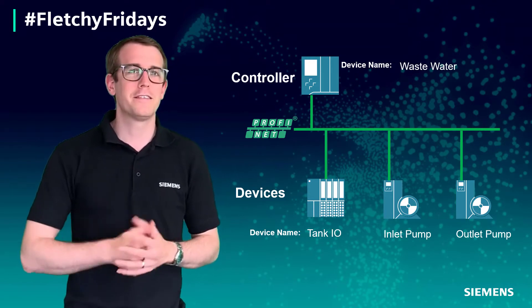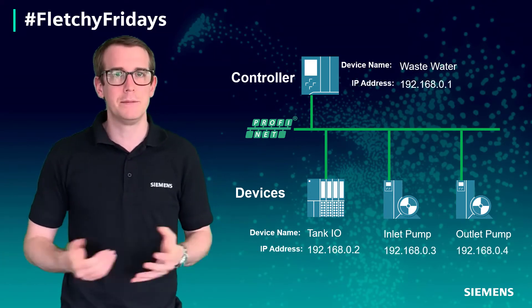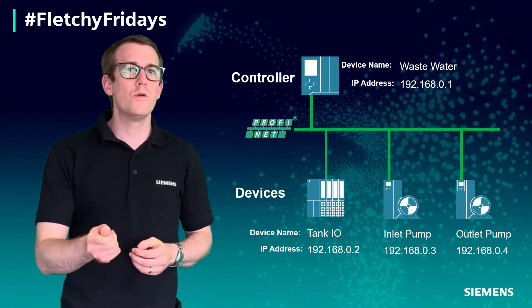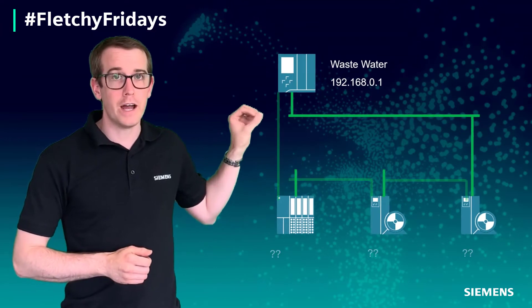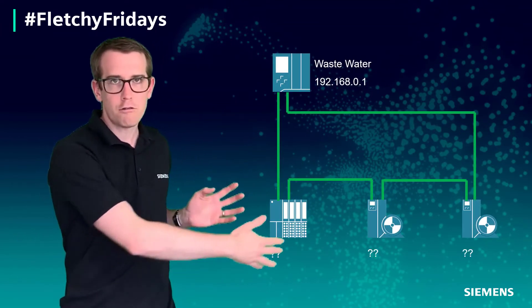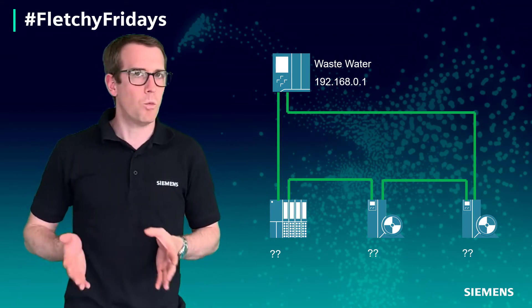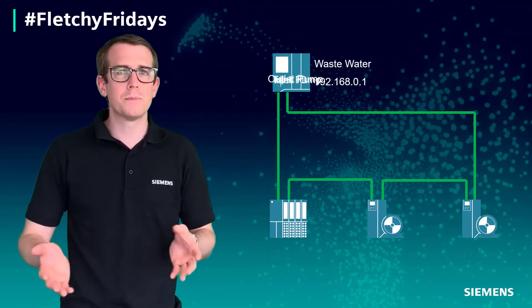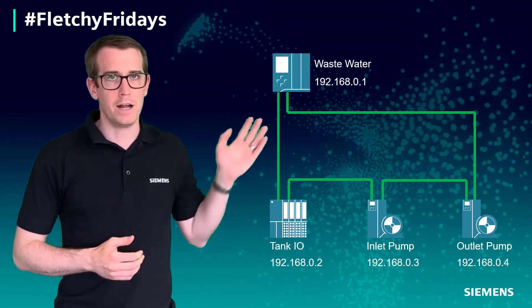On top of this, we do have IP addresses assigned to these devices because it is a TCP based system. What's really cool with ProfiNet though, is if in the controller you define your topology for the entire network, then you don't need to go around all these devices manually telling them what their name is and what their IP address is. It'll get automatically assigned at power up by the controller.